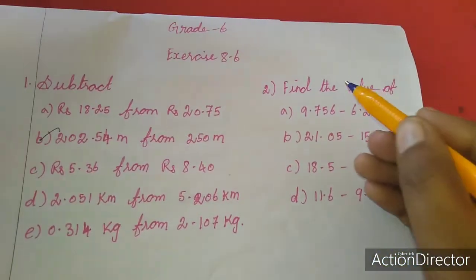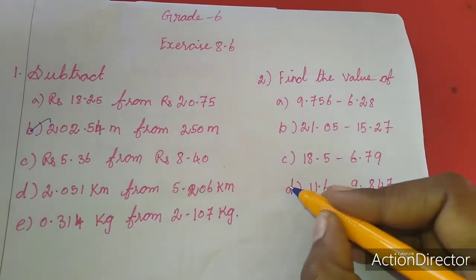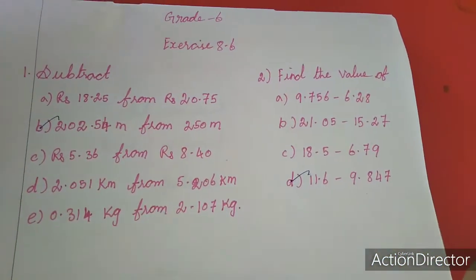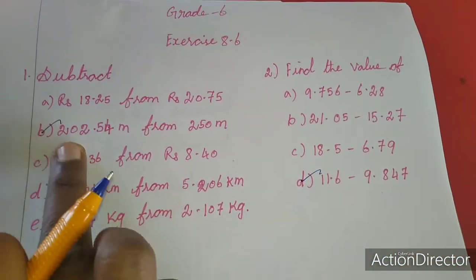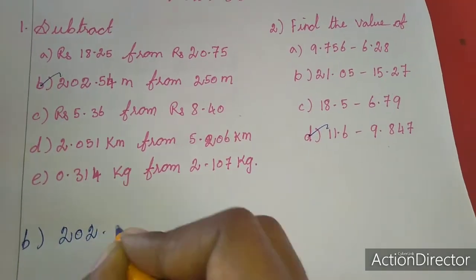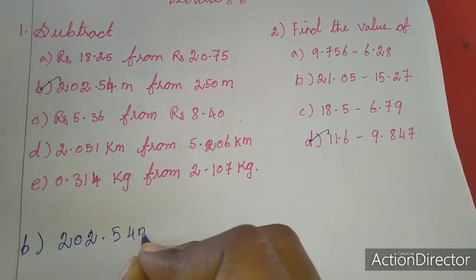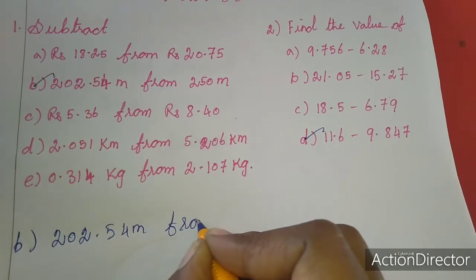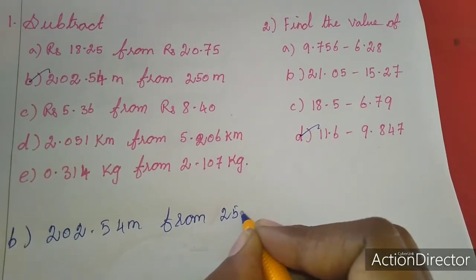So I am going to do only one sum, that is B sum. In the second sum also same method only. In this I am going to do D sum. Balance every sum is homework for you. First I will do this sum. First I write the sum.